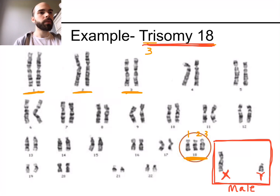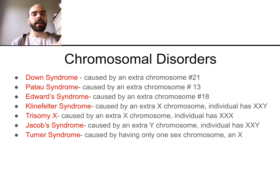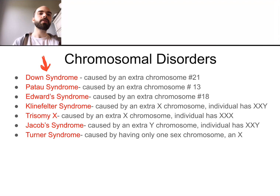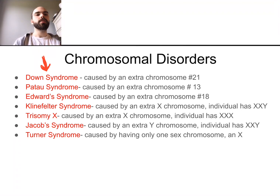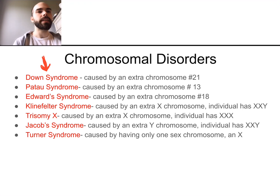Now it's your turn. You're going to read some karyotypes and identify the genetic disorders. I've made a list where I name the disorder and tell you what the chromosomal abnormality is. Use that list to identify the chromosomal disorders based on the karyotype pictures provided.